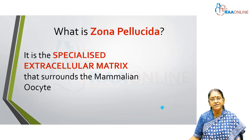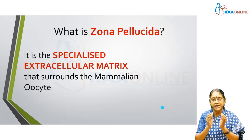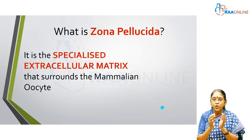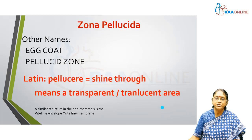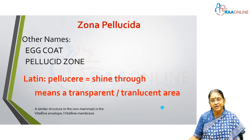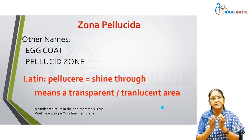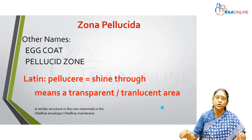It is the specialized extracellular matrix that surrounds the mammalian oocyte. We've always noticed that the oocyte is surrounded by a kind of an envelope, and this envelope is called the zona pellucida. The zona is also called the egg coat. The oocyte, the ovum, is the egg, and the envelope that coats the egg is called the egg coat.